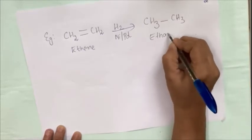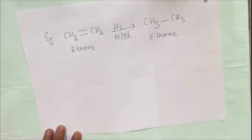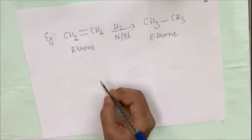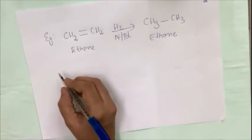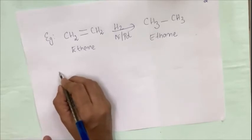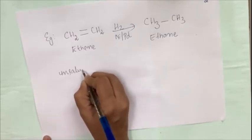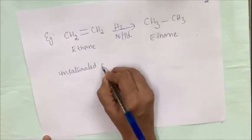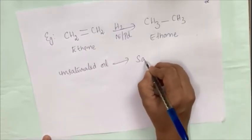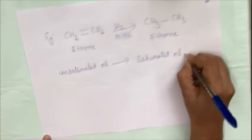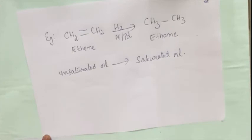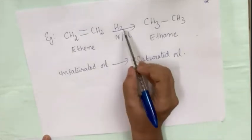The product that we get is CH3–CH3. The name of the saturated compound with two carbon atoms is ethane. This particular reaction also has industrial importance. The main use of addition reaction is the conversion of unsaturated oil to saturated oil. This is the industrial importance of addition reaction.